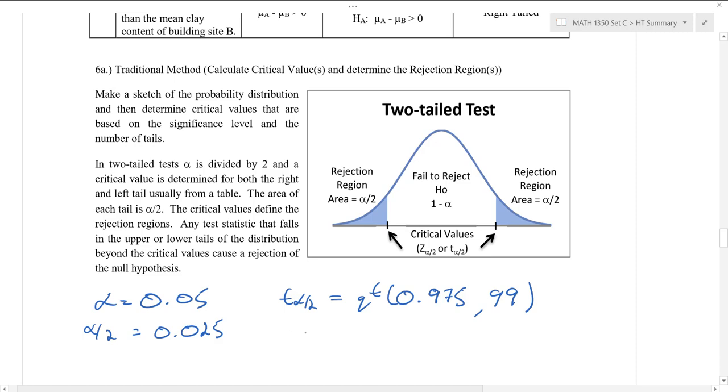If you compute that out, you're going to get a t alpha over 2 of 1.98. So what we've done so far is to determine this critical t alpha over 2 value. So in this example, we're working with t and not z. So here is 1.984. And over here is the negative, negative 1.984. So this area in the middle is the failure to reject region.